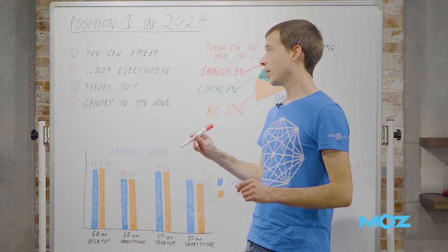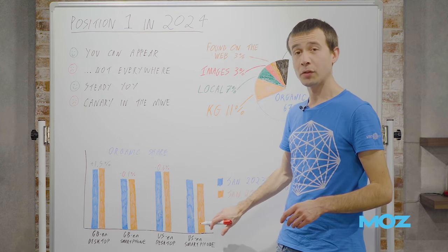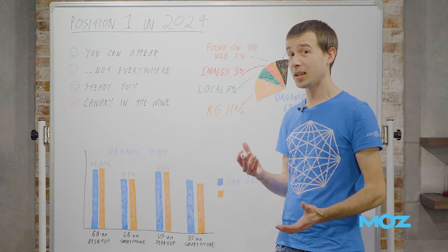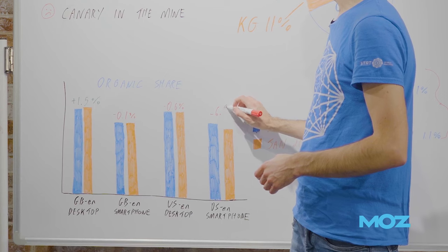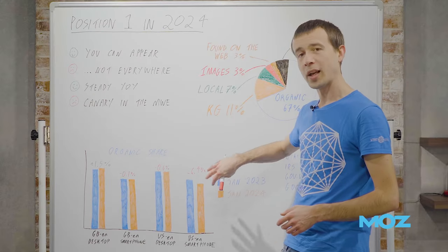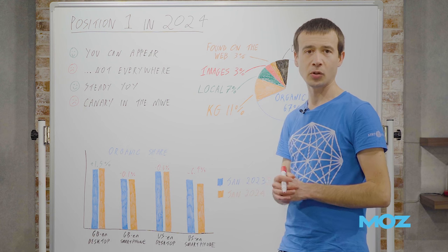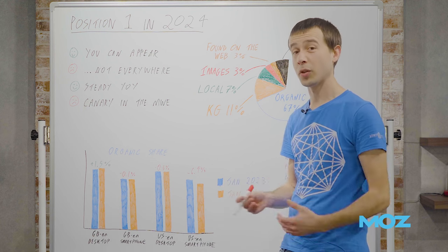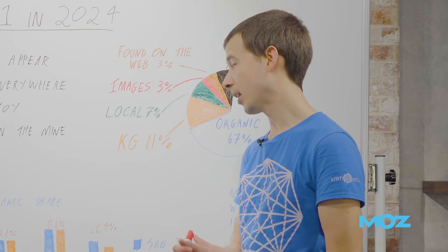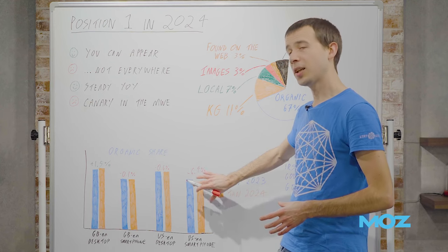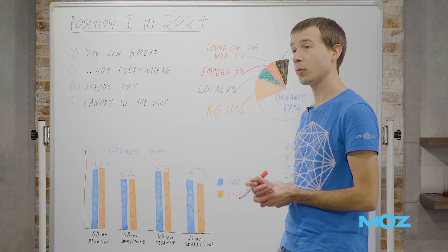However, the less good story is there is a bit of a canary in the coal mine. US smartphone, which I think tends to be a leading indicator, is down 6.4 percent year-on-year. This hasn't really gone to any one other result type in particular. It's spread across everything, so this is kind of a trend in what organic is doing, not just one feature being swapped in and out. This is a little bit concerning, but hopefully this is the exception that proves the rule.